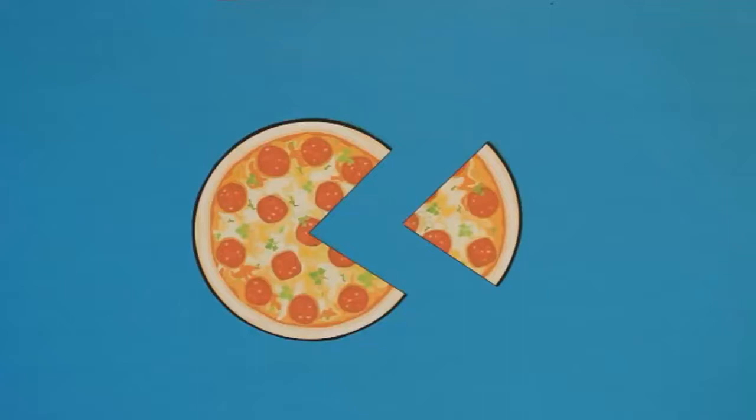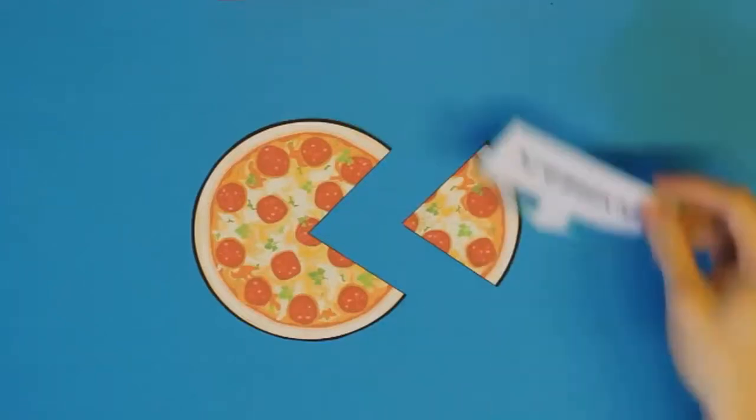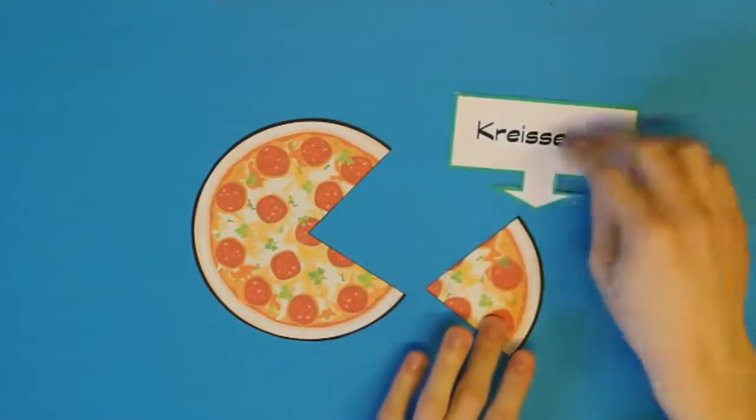Dieses Pizzastück hier ist eben nicht nur ein Pizzastück, sondern, wenn wir die Pizza als Kreis sehen, wie wir gerade gesagt haben, auch ein Teil des Kreises. Und so einen ganz bestimmten Teil, so wie dieser hier aussieht, der könnte natürlich auch etwas größer und etwas kleiner sein. Auf jeden Fall, diese Art von Teil nennt man einen Kreissektor.